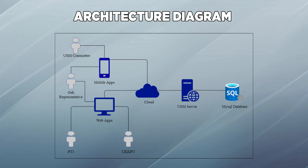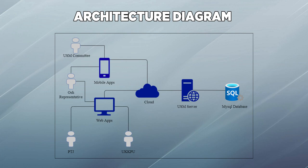This is the CampusSafe architecture diagram. The CampusSafe system consists of two platforms: a mobile application and a web application. There are four users in this system. The first user is the USM Committee, who uses the mobile app to create HIRAC reports. The second user is the OSH representative, who uses the web platform to conduct hazard identification based on HIRAC guidelines. The third user is PTJ, who uses the web application to view HIRAC reports based on their school. The last user is UKKPU, who uses the web application to view, verify HIRAC reports, manage users, and view statistical analysis generated by the system.